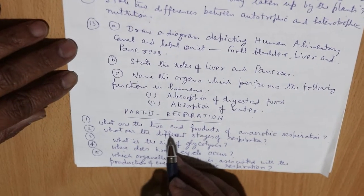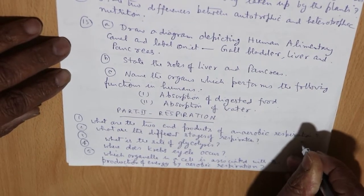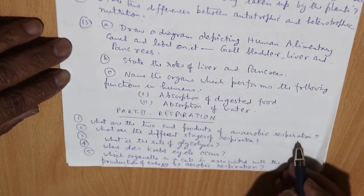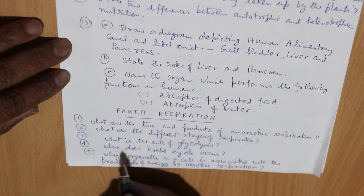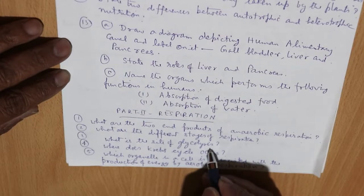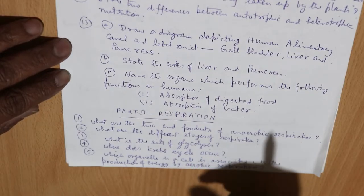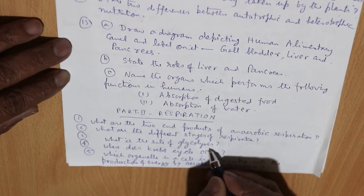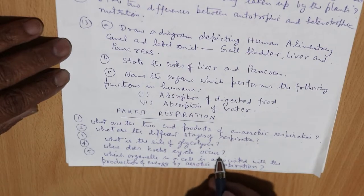What are the two end products of anaerobic respiration? Anaerobic respiration takes place in the absence of oxygen — what are the two end products? What are the different stages of respiration? What is the site of glycolysis? Glycolysis is the breaking down of glucose — where does it take place inside the cell? Then, where does the Krebs cycle occur?